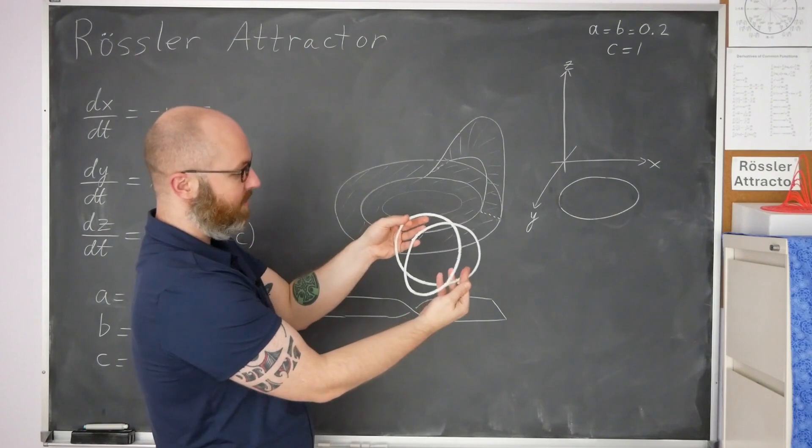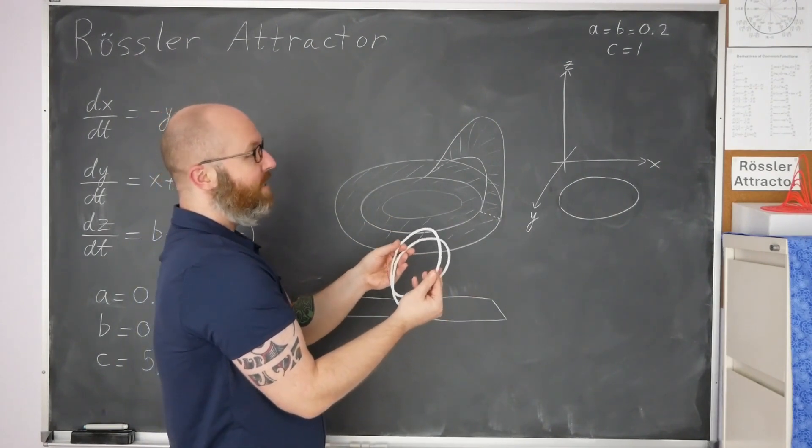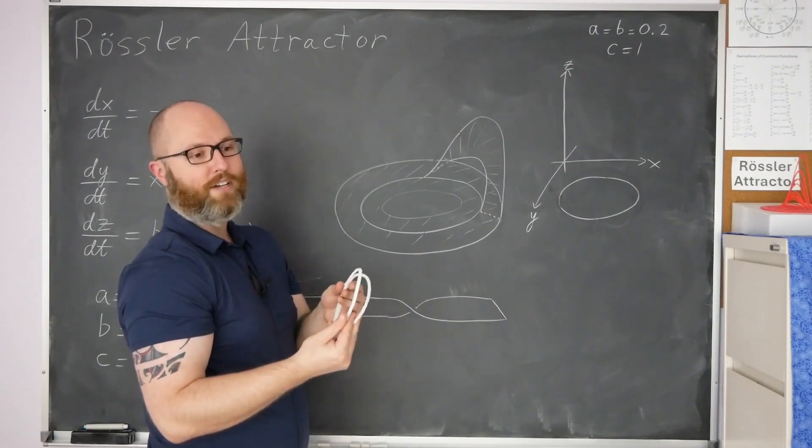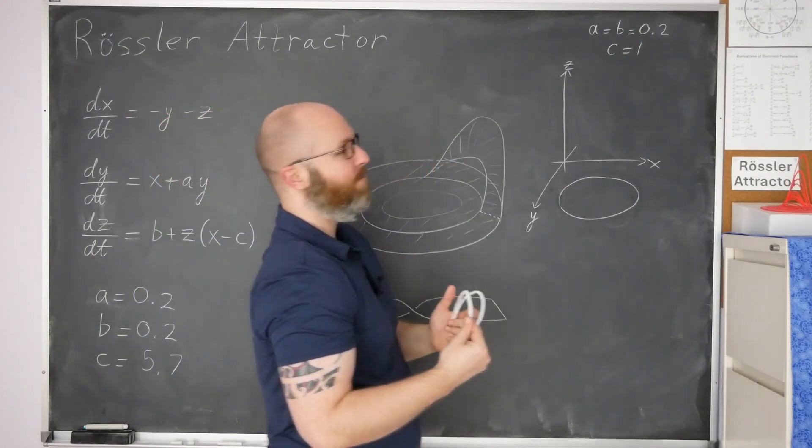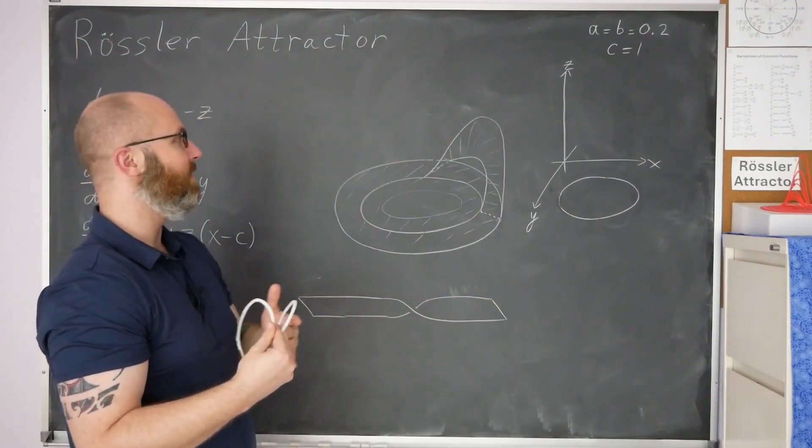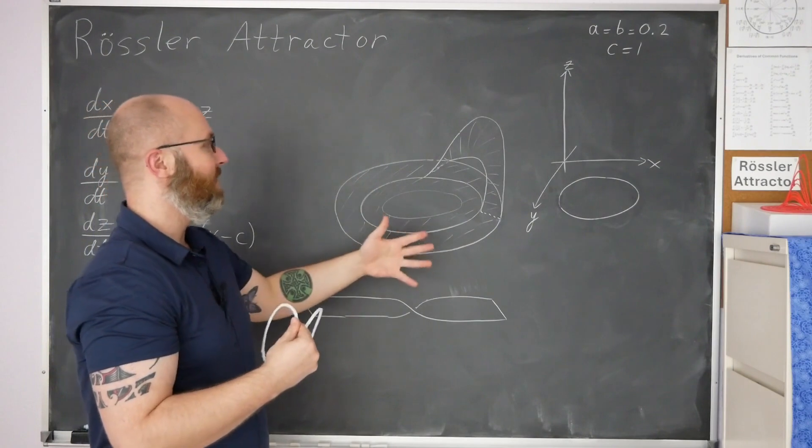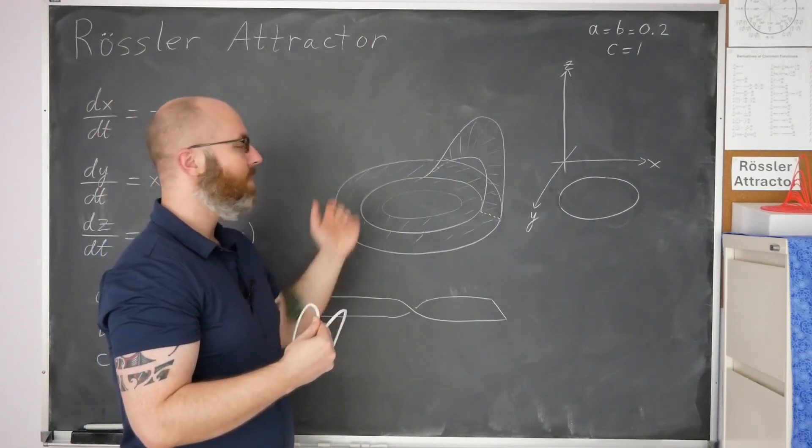So the separation is called a period doubling bifurcation. And you essentially have an infinite number of period doubling bifurcations in a finite change of the parameter c. So you double the length an infinite number of times over finite change in c. And you essentially end up with kind of an infinitely long limit cycle that's attracting, and it ends up filling a two-dimensional surface.